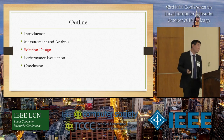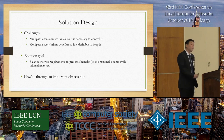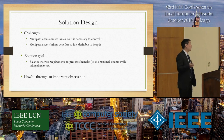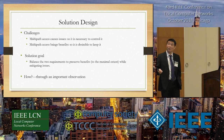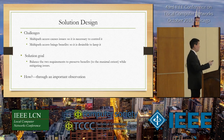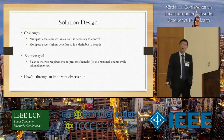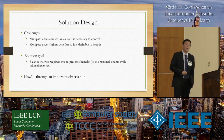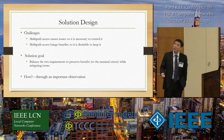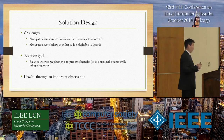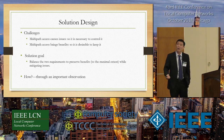We try to solve those issues, but the first challenge is two contradicting requirements. On one hand, multipath access causes issues to overall network performance, so we have to constrain it. On the other side, multipath access brings interesting benefits as mentioned. We want to keep those. Therefore, we do not argue which one to choose — we try to balance the two requirements, preserving the benefits to the maximum extent while solving those issues.